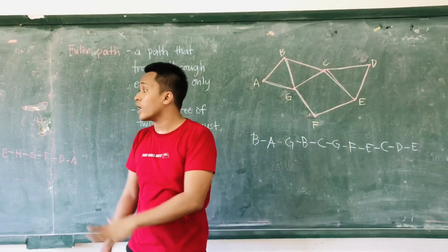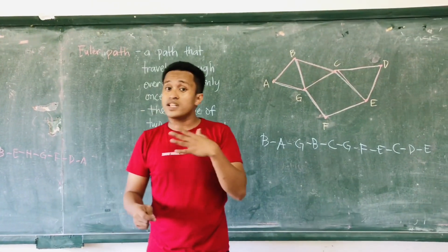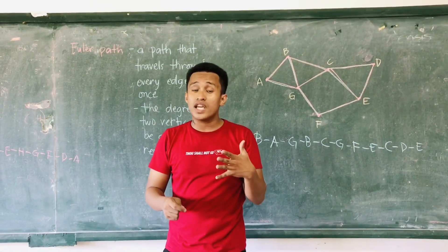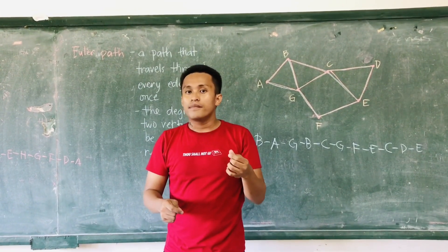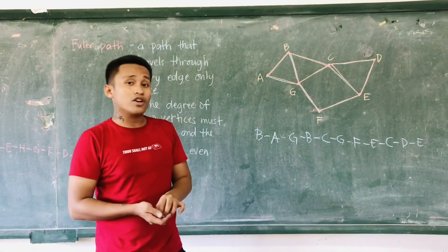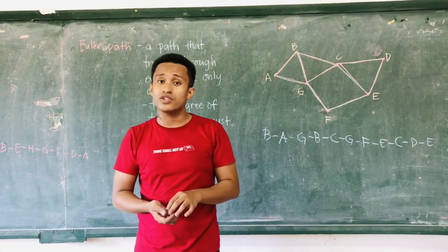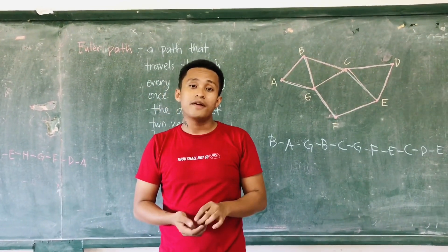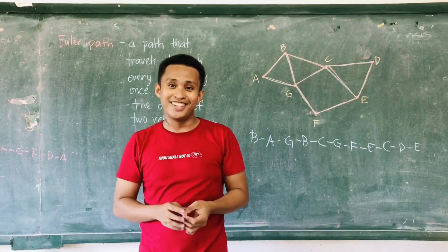To summarize: for an Euler path, you must start with a vertex of odd degree and end with another vertex. Unlike the Euler circuit, where all vertices must have even degree. I hope you have understood this lesson. See you next time. Bye!